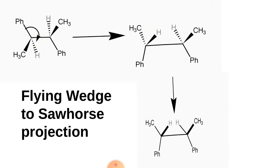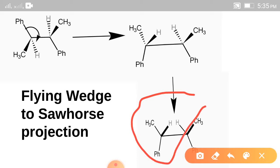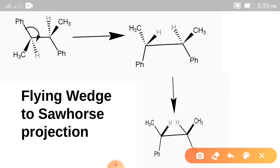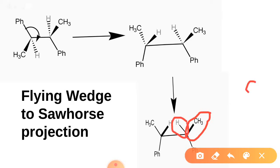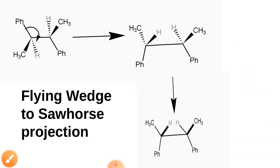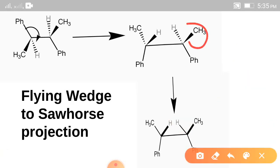In sawhorse projection, we have to remember one point: the above plane is denoted by the upper bond, and the below plane is denoted by the lower bond. If this is phenyl, and above plane will come to this side — these are above plane and these are below plane. So CH3 is in the above plane, so it will come at this side. And hydrogen is in the above plane, so hydrogen will come at this side.